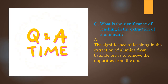Now it's question and answer time. The question is: what is the significance of leaching in the extraction of aluminium? The significance is that leaching of bauxite ore with NaOH removes impurities such as silica, iron oxide, and titanium oxide from the ore, allowing us to obtain pure aluminium in concentrated form.